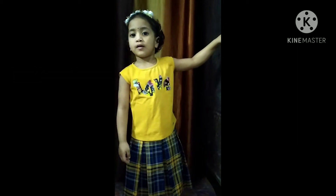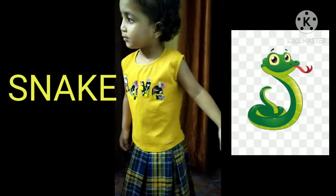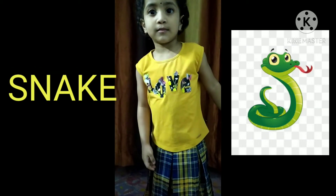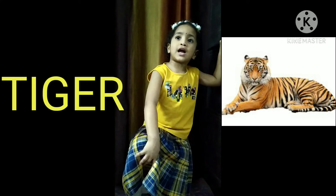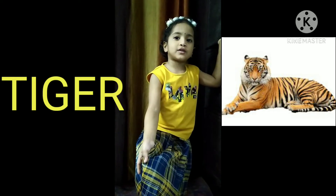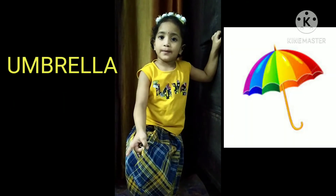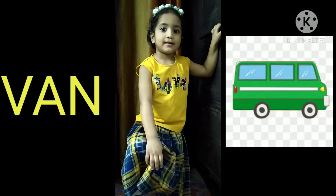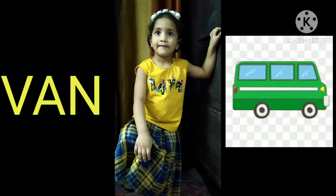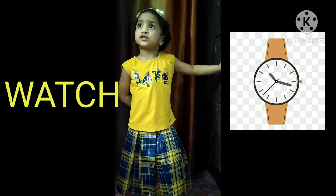S is for? Snake. T is for? Spur. Tiger. Telephone. U is for? Umbla. V is for? Fan. W is for? Watch.